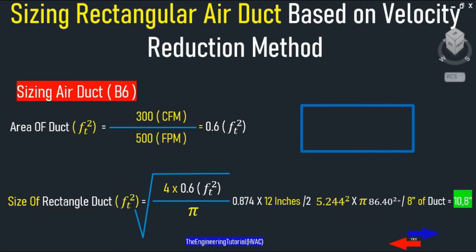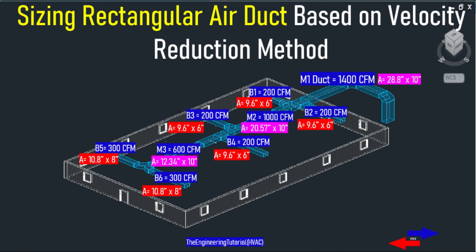For the 300 CFM branch: 300 CFM divided by the design velocity of 500 FPM gives the required duct size. These are the required sizes determined by using the recommended velocities. That's it for today — thank you for watching this video.